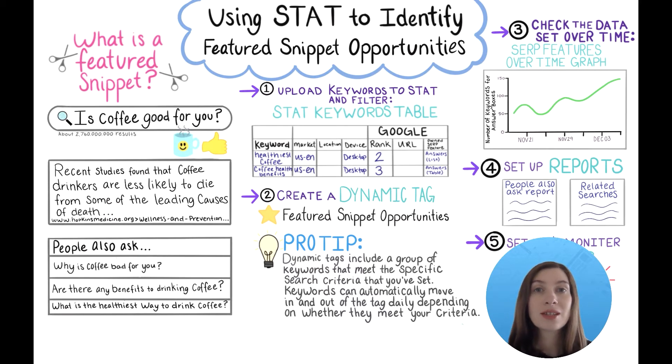Websites that have URLs ranked in a featured snippet often experience heightened brand visibility and the majority of available traffic from an associated keyword.